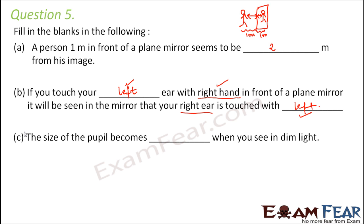The size of the pupil becomes blank when you see in dim light. When there is less light, the pupil wants more light to come in, so the size of the pupil increases. The size of the pupil becomes larger in dim light, and when you look directly into bright sunlight, it becomes smaller because it does not allow all the sunlight to enter the eye.